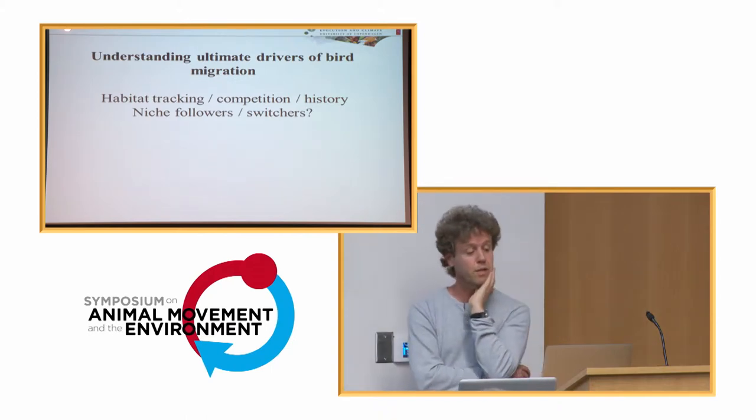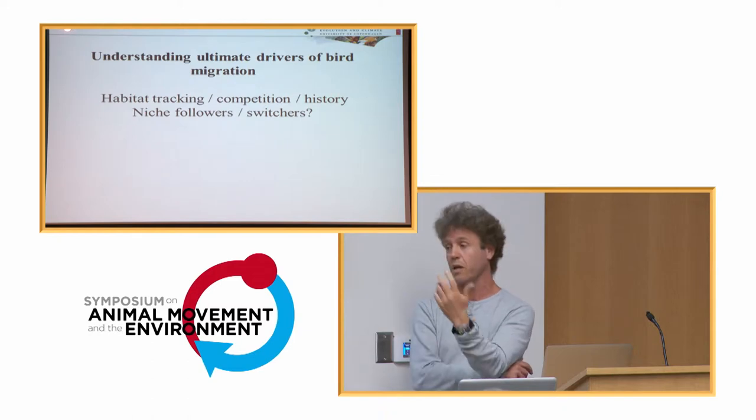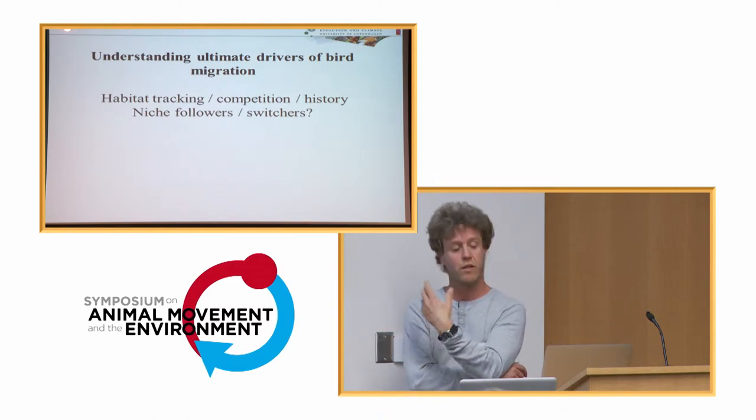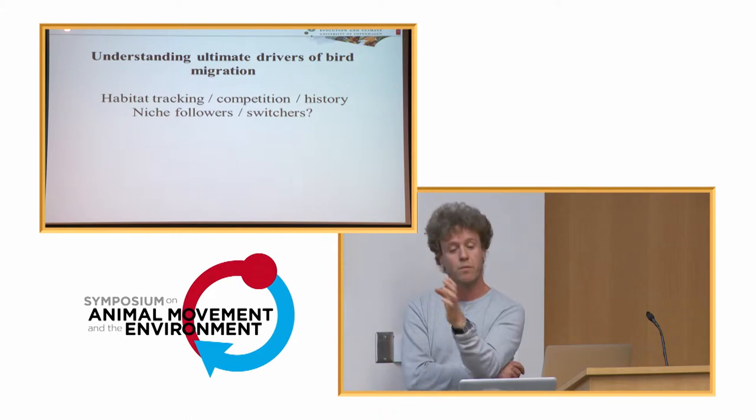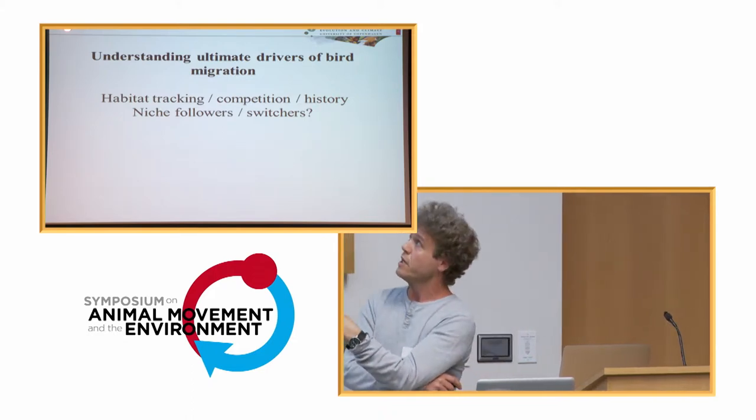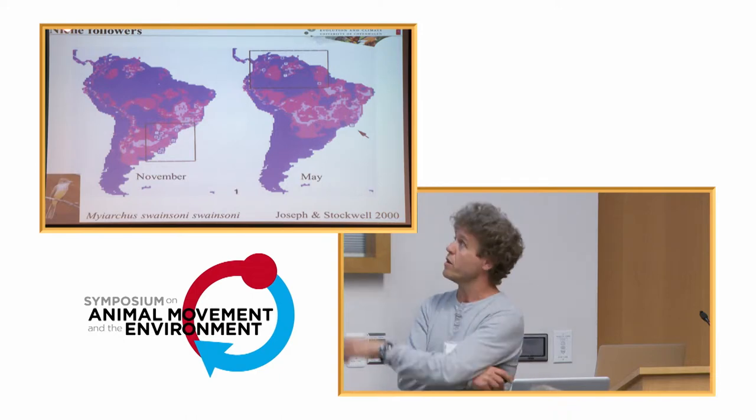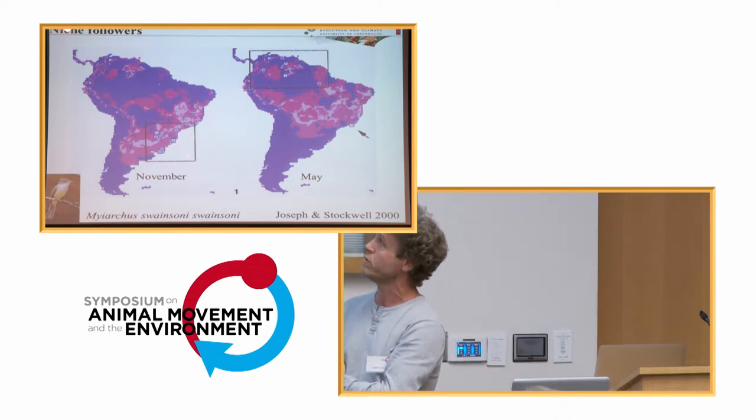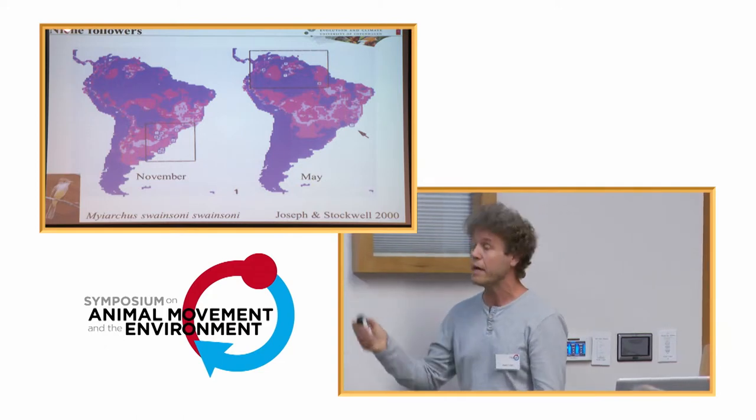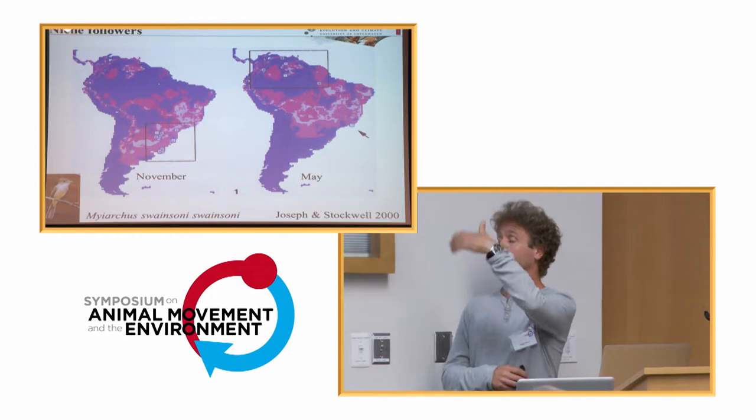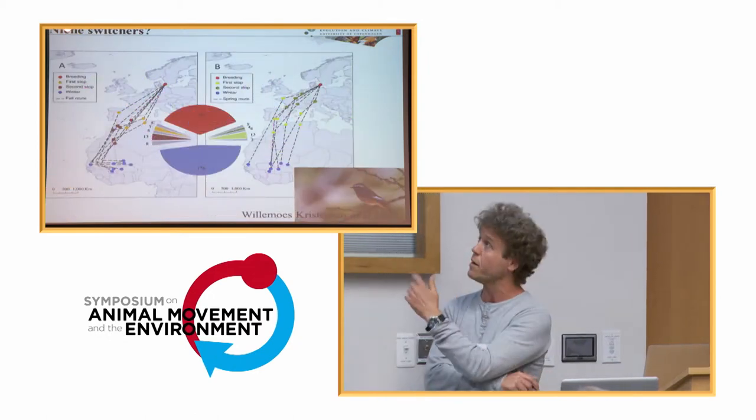But we're going to come back to that. Then there's this concept of niche followers and niche switchers. And that particularly has been discussed between the new world species and the old world species. The species will follow the habitat all the way along, both in the breeding and the winter grounds, whereas others, they will switch the habitat during the season, during the annual cycle. So there's an example here with Myakos flycatcher. This is just based on the temperature. It was in November and just these very few points. And they were changing as the temperature changed in May. And this was sort of the idea for niche follower where it's following these temperature changes.